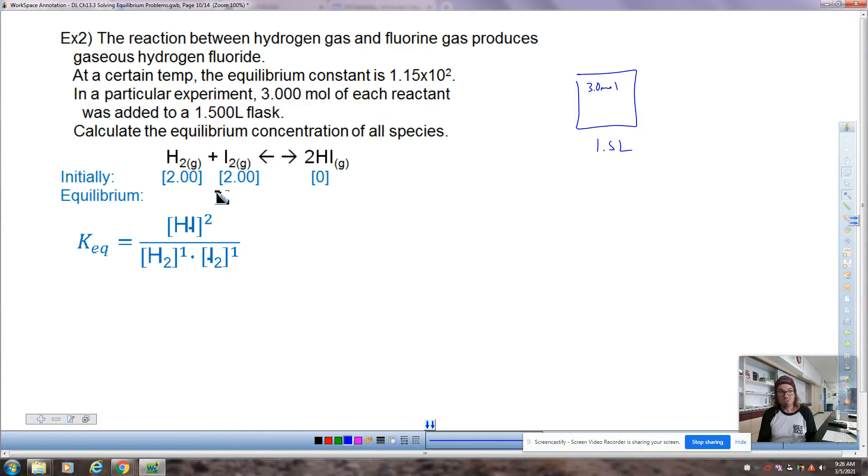Now, this reaction has no choice but to proceed towards products. So we're going to lose X amount of hydrogen. And since it's in a one-to-one ratio, we're going to lose X amount of iodine. And since they're in a one-to-one ratio with the hydrogen iodide, we're going to gain 2X amount of the hydrogen iodide. Make sure that makes sense. So in my KEQ expression, I can say that if I move the decimal over two places, that just becomes 115. 115 equals 2X squared divided by 2 minus X times 2 minus X. Once again, I'm going over these very quickly because you are supposed to pause these and then do the math and see if you're working out the same way that I'm working things out.